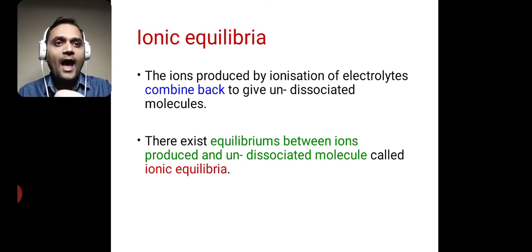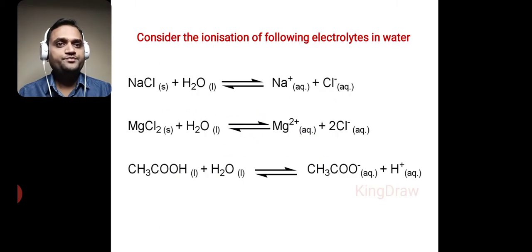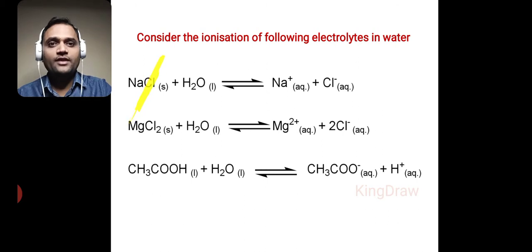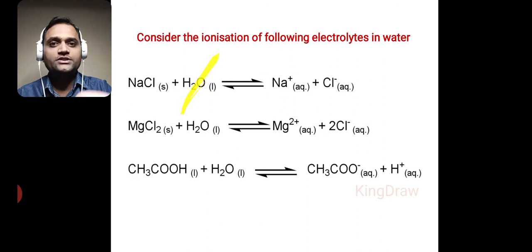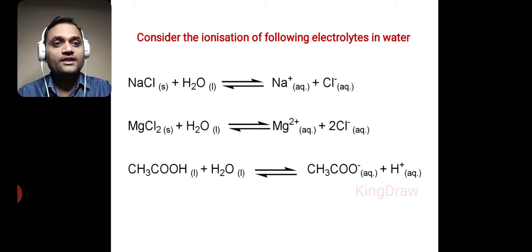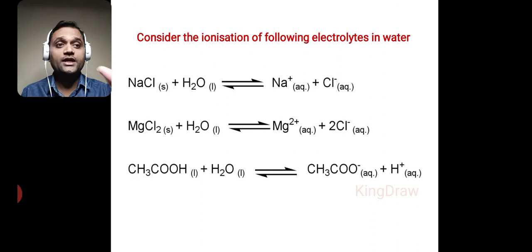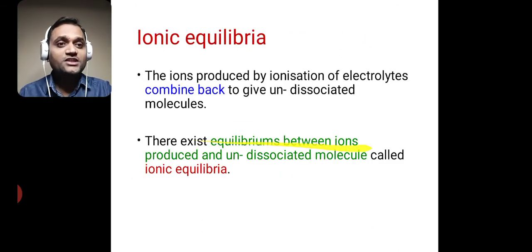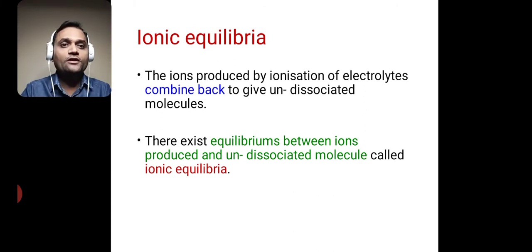The ions produced by ionization of electrolytes can combine back to give undissociated molecules. For example, NaCl as an electrolyte undergoes ionization when added into water to form ions, and those ions may recombine to give an undissociated molecule. There exists an equilibrium between the ions produced and the undissociated molecule, and this is called ionic equilibria.